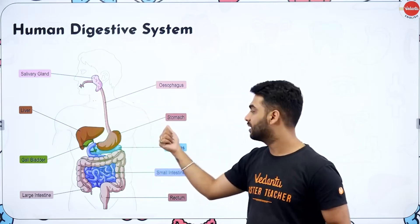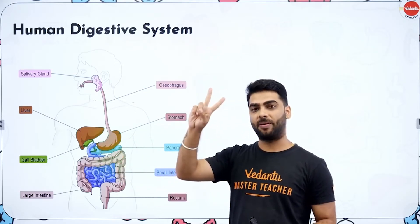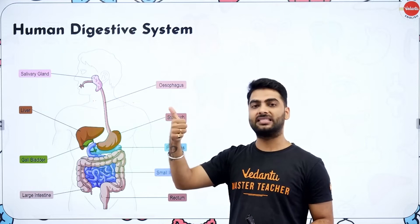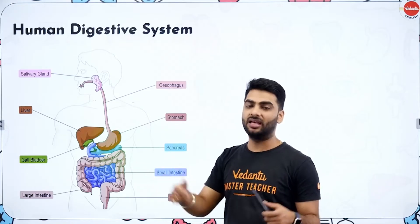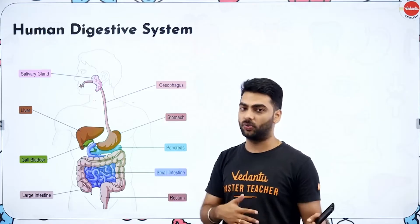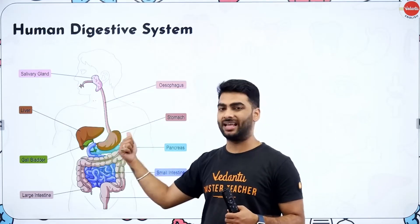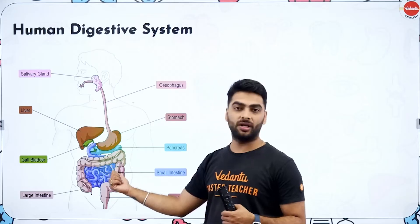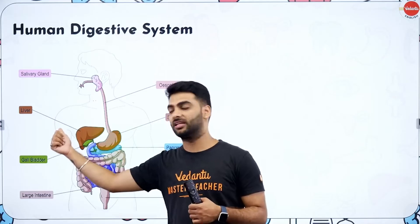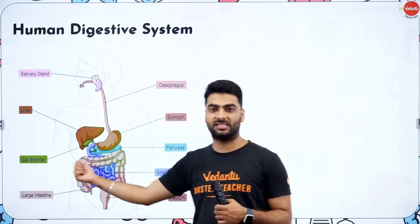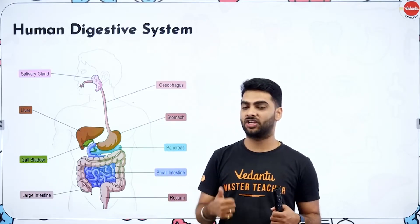Food moves from the mouth to the stomach via the esophagus, which is 20 cm long. The stomach is the widest part of the digestive system, containing HCl, pepsin, and mucus. HCl is secreted by oxyntic cells — it maintains acidic medium, kills germs, and activates pepsin, which converts proteins to peptones. Mucus protects the stomach walls from HCl. The acidic food then moves into the small intestine, made alkaline by bile — secreted by the liver, stored in the gallbladder, and supplied to the small intestine. Bile also helps in emulsification of fats.